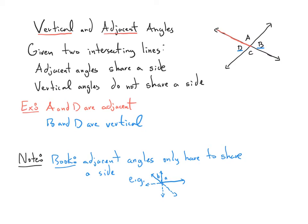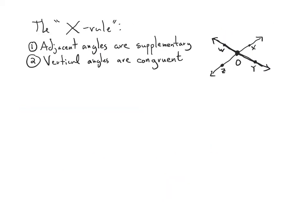Now that I've told you about adjacent and vertical angles, I can tell you the relationship between them in terms of their measure — and not only can I tell you what it is, I can show you why, using the tools and axioms that we have. Here is the X rule. It's a very powerful rule. It says two things if we have two intersecting lines.